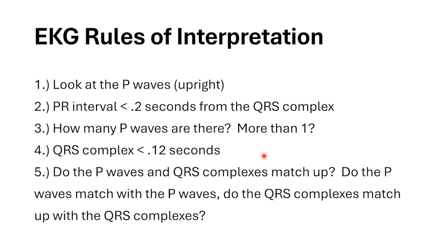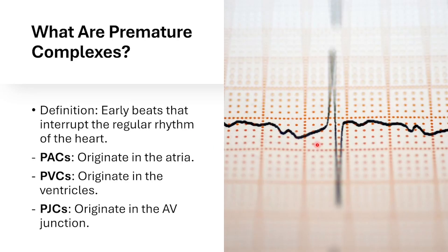Whenever we're looking at complexes, you're going to see that it's more so associated with the sinus rhythm, but it's not always the case. So what are premature complexes? They're early beats that interrupt the regular rhythm of the heart. They're usually benign, but they can show a potential abnormality that may be arising in the near future. PACs originate in the atria, PVCs originate in the ventricles, and PJCs originate in the AV junction.